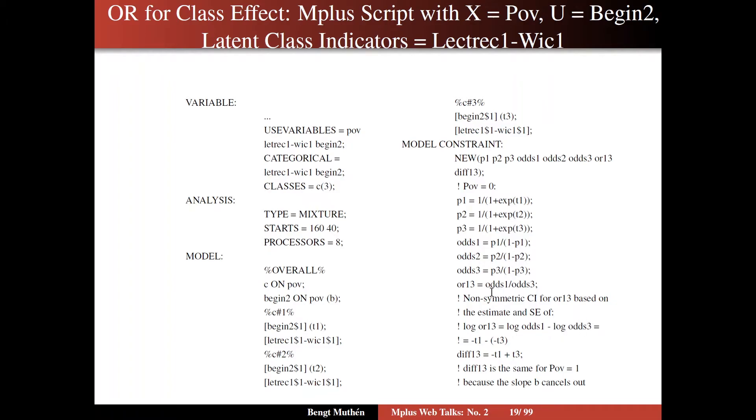Because the log of a ratio is the difference between the two log odds. So the log of odds 1 divided by odds 3 is the log of odds 1 minus the log of odds 3. We know that the log odds for each of the three categories is the threshold. It's only the threshold that influences that. So it's the minus the threshold. And the difference between that and the minus of the T3 comes out here. So the difference is minus T1 plus T3.